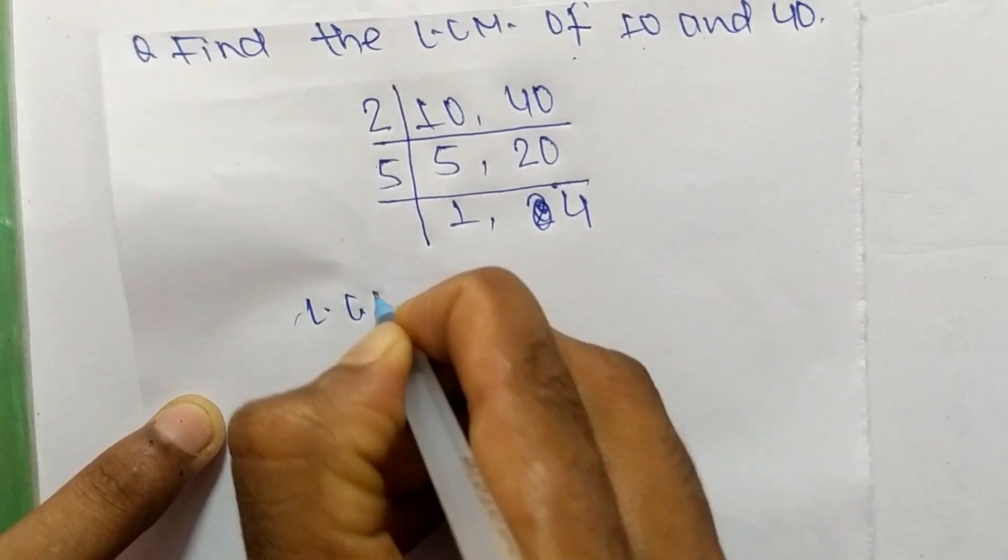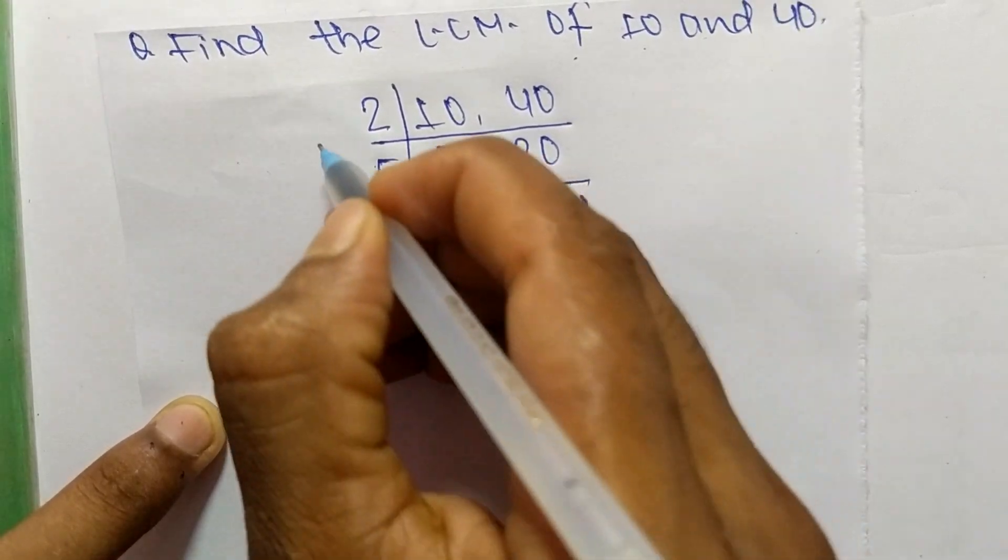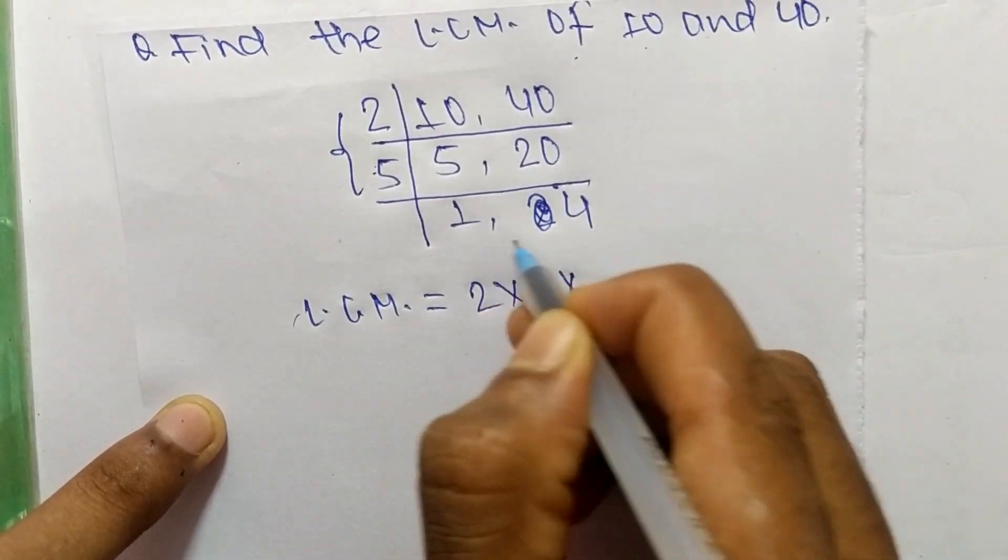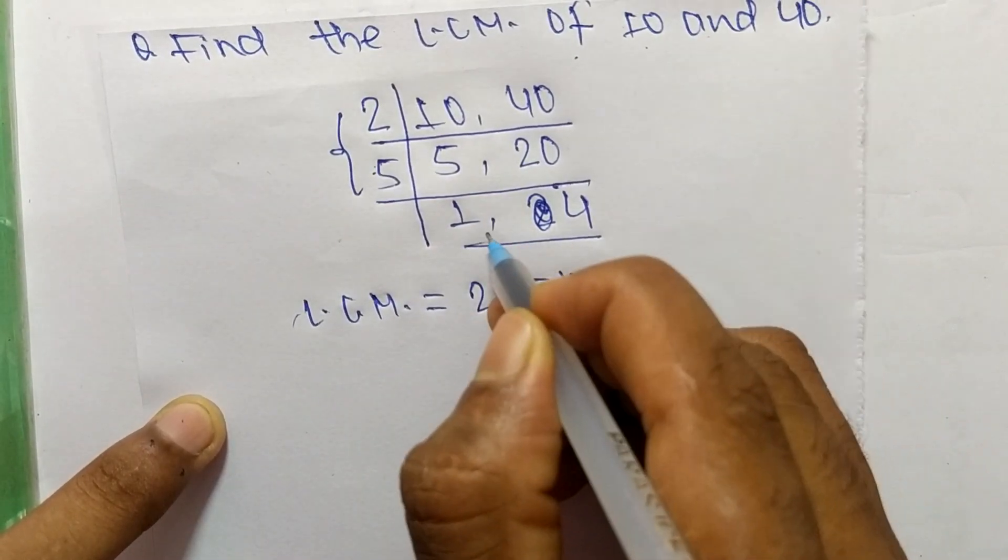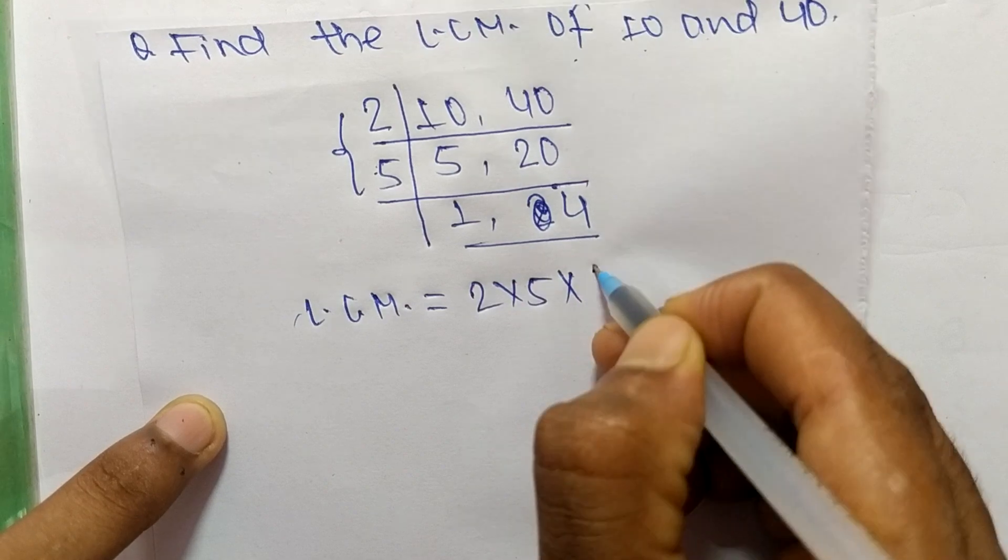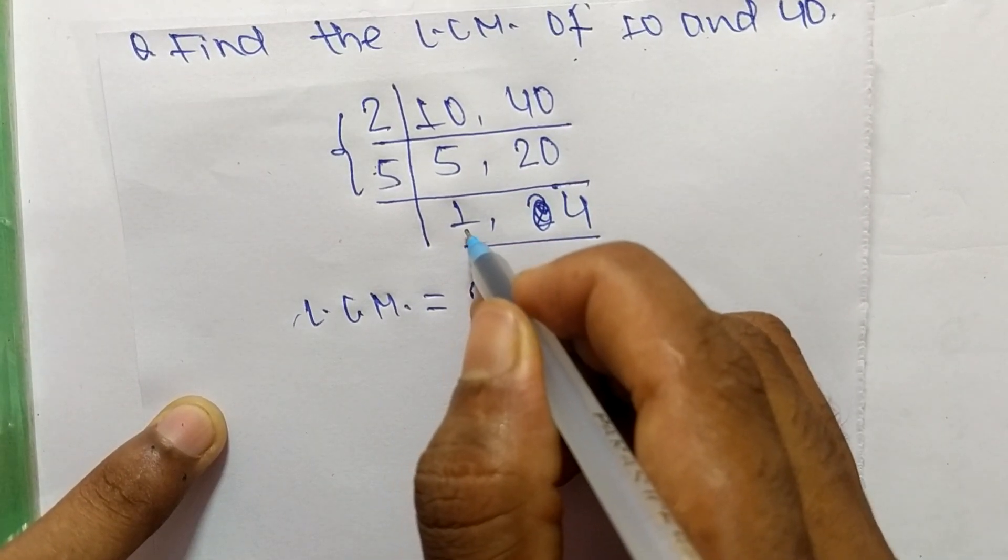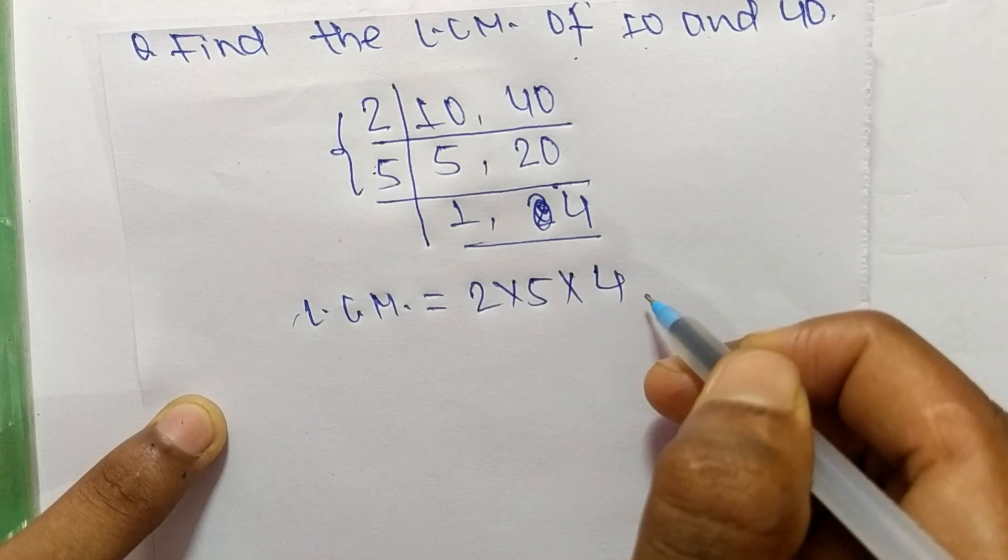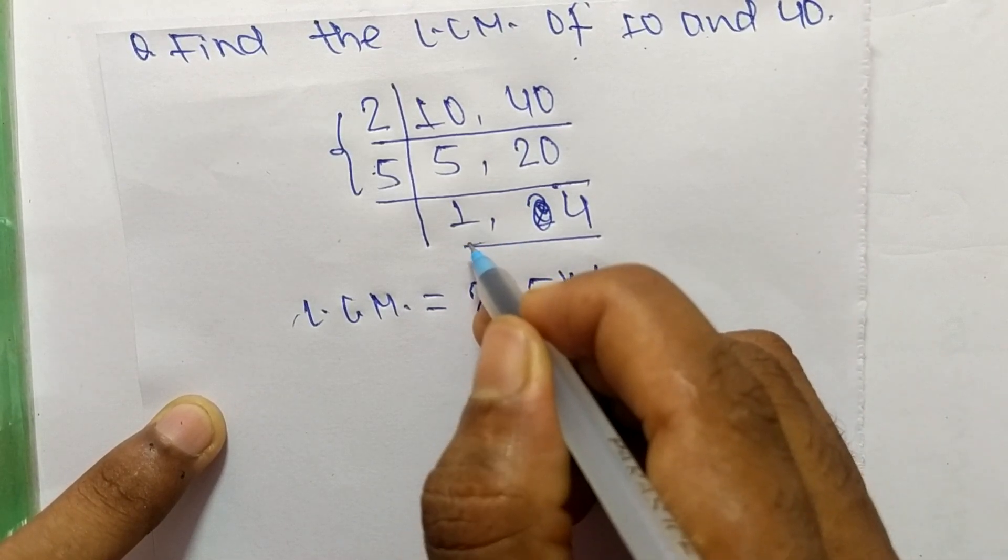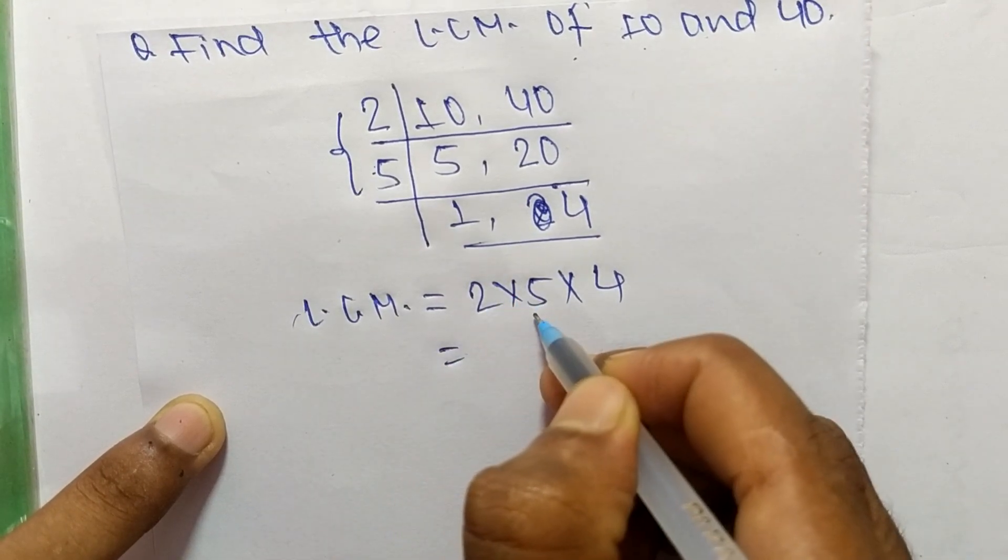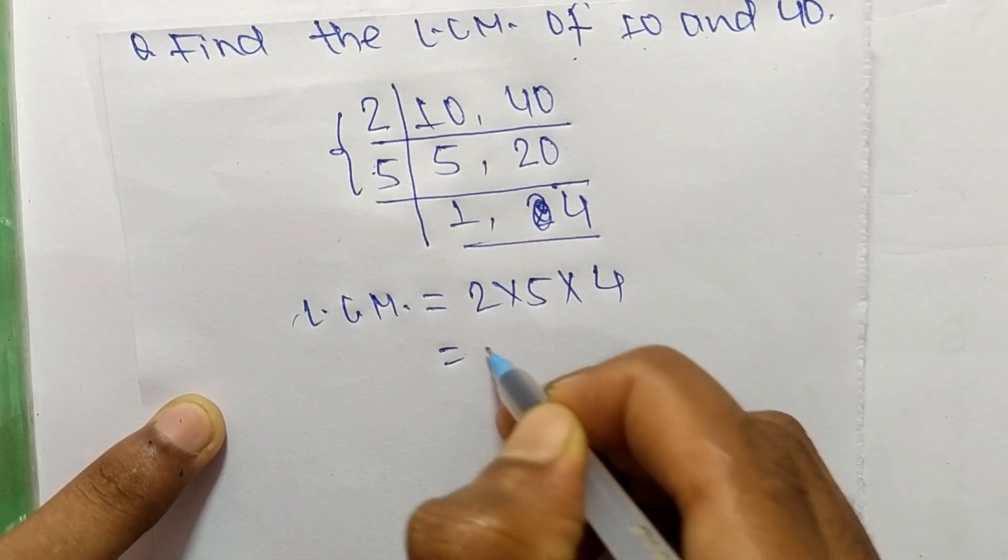now the LCM is equal to 2 times 5 from the divisors, and from the final row we have 1 and 4, but we take only 4 and neglect 1 because multiplying with 1 gives the same number. So 2 times 5 means 10, and 10 times 4 means 40.